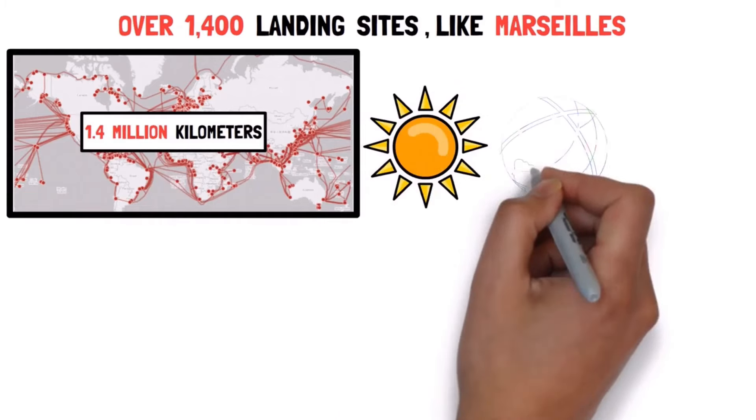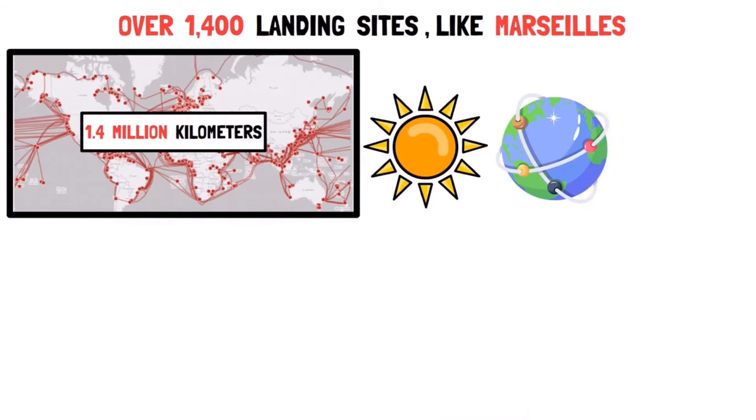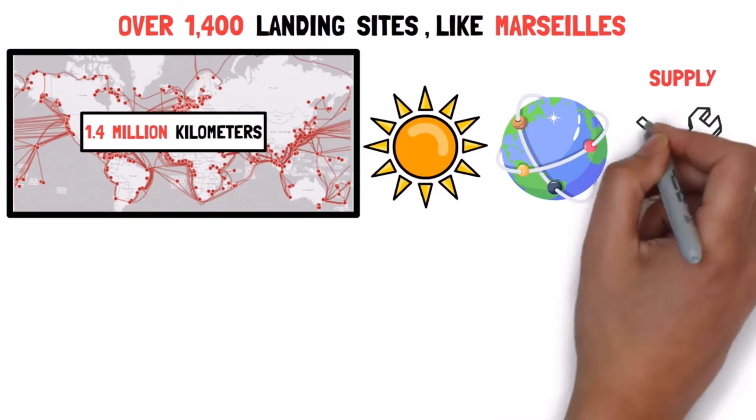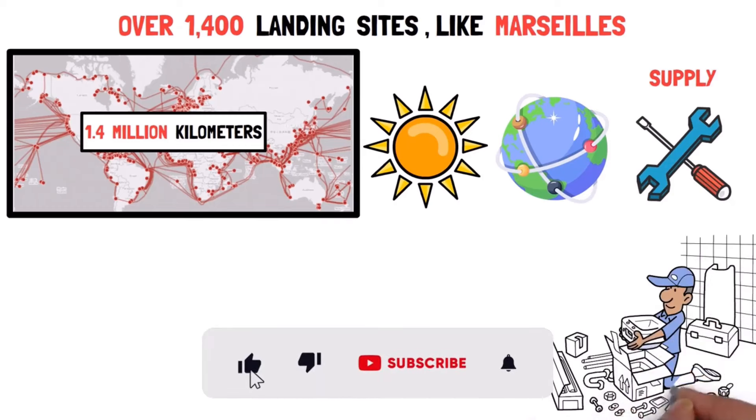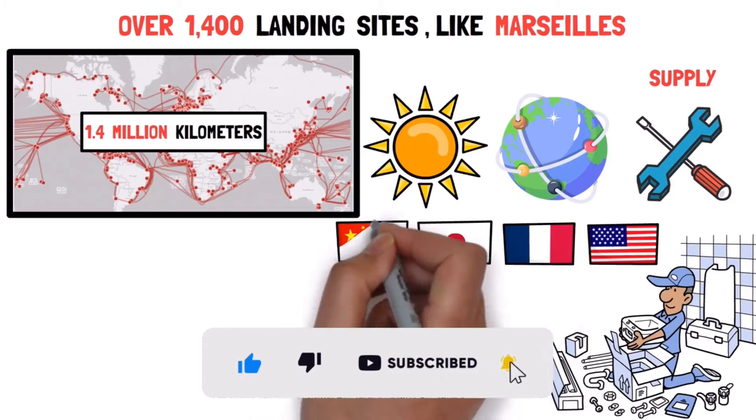Even though the network provides seamless internet traffic across the globe, the supply, installation, and maintenance of these cables are dominated by a handful of companies from the United States, France, Japan, and more recently, China.